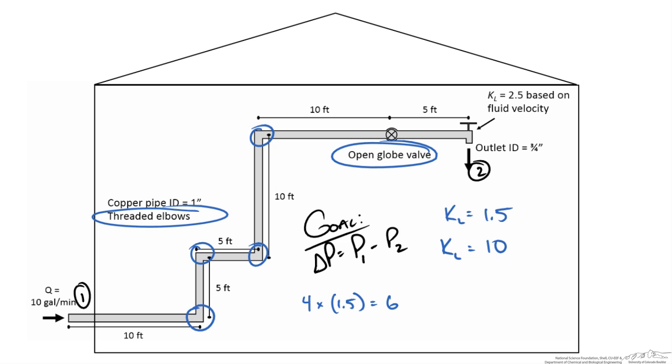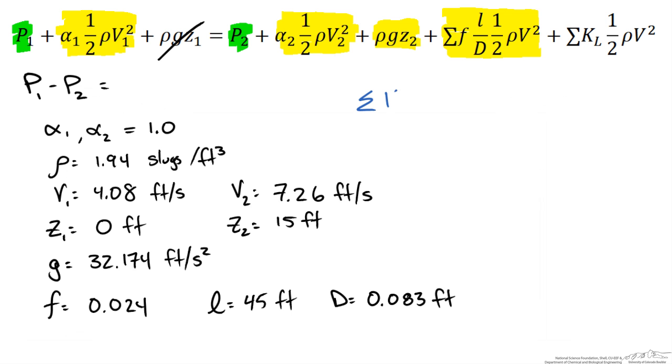The last thing we can see in this problem is that there is a KL at the faucet, and this KL is given to us as 2.5. So the sum of our KL terms gives us 18.5. And again we have our density and our velocity through the piping system of 4.08. So now we have everything to determine the minor loss term.